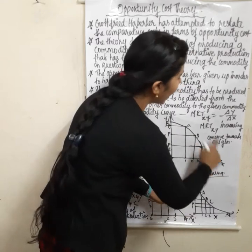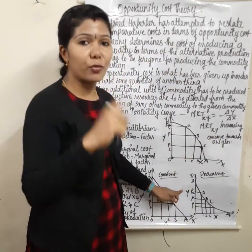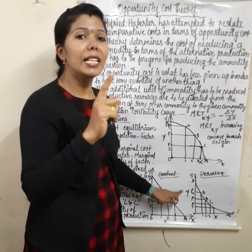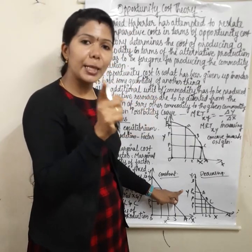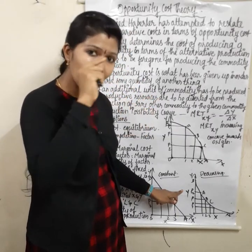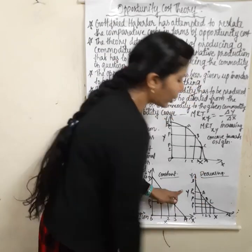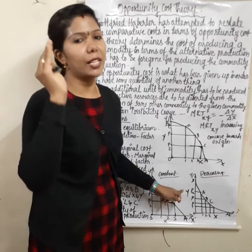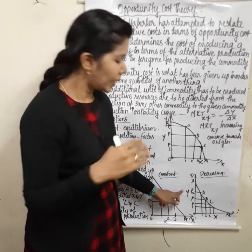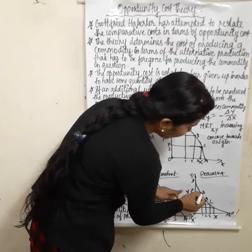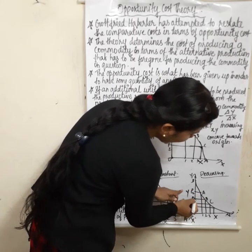Decreasing MRT XY — marginal rate of substitution X for Y is decreasing. The curve is concave to the origin. In this relationship, you can have points P1 and P2 on the curve.